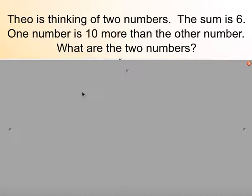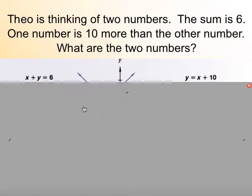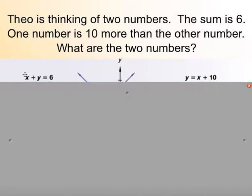Let's think about this riddle. Theo is thinking of two numbers. The sum is 6, and one number is 10 more than the other. What are the two numbers? If we have variables x and y, we can create two equations: x plus y equals 6, and y equals x plus 10. These are two different forms — x plus y equals 6 is in standard form, and y equals x plus 10 is in slope-intercept form.